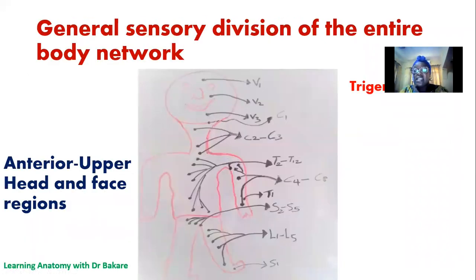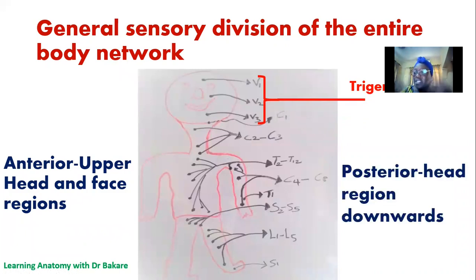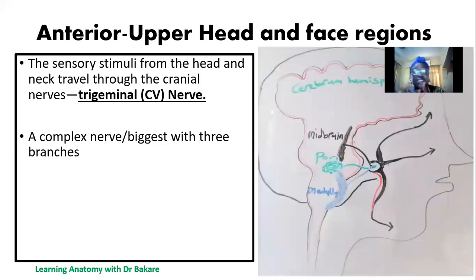The entire body, for the sake of the sensory pathway, will be divided into the upper head region and also the face region. The sensory innervation of this region is carried by the trigeminal nerve. The trigeminal nerve is responsible for carrying sensory stimuli around the face region, and for the posterior part of the head and downward, the remaining part of the body is carried by spinal nerves — the cervical, thoracic, lumbar, and sacral nerves. The anterior and face region is the focus for this lecture.